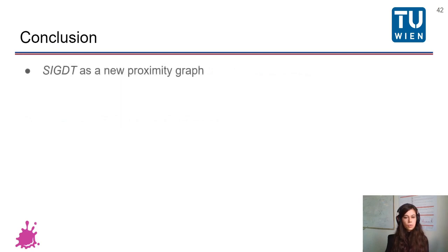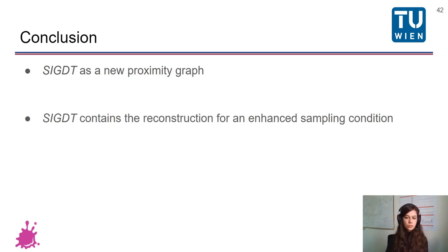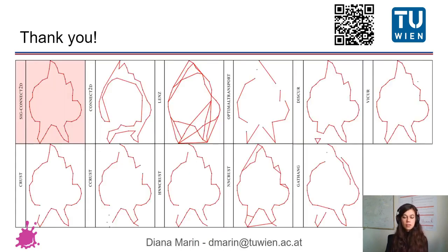In conclusion, we have introduced SIGDT as a new proximity graph. And we managed to prove that it contains the reconstruction using less points than previous methods than state-of-the-art. And we have proved that it is the best manifold curve reconstruction method out there using the benchmark and using some steps from a previous method, starting from our proximity graph. Thank you for your attention. And if there are any questions, you can also find our method online, open source, using the QR code on this slide.